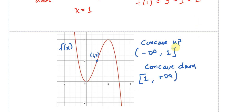I do want to point out that 1 is on both intervals. At 1, you can say it's both concave up and concave down. The reason is that (1, 2) is the inflection point. It's that instantaneous moment where a graph changes from concave up to concave down.